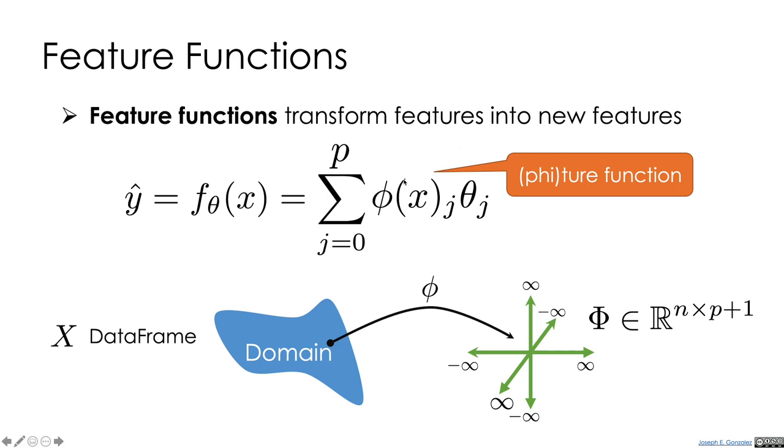A bit of notation, I'm using the phi function. This is the Greek pronounced phi or phi. We'll call it phi because it sounds like feature. So this is our feature function. And that's going to transform our x to this vector space. So then we'll use the capital phi to represent the transformed data frame.